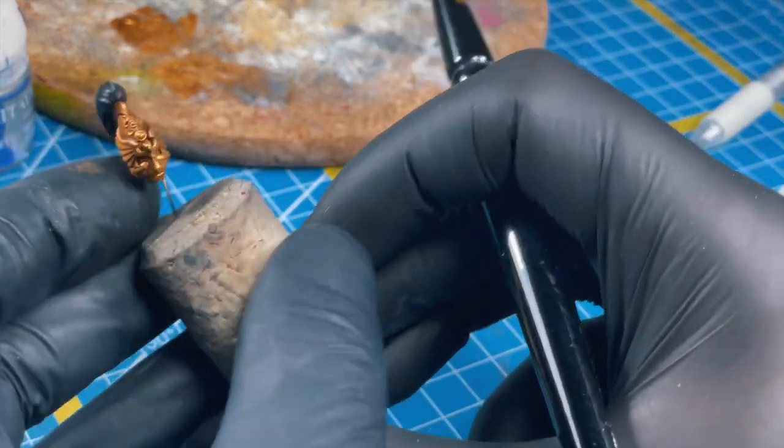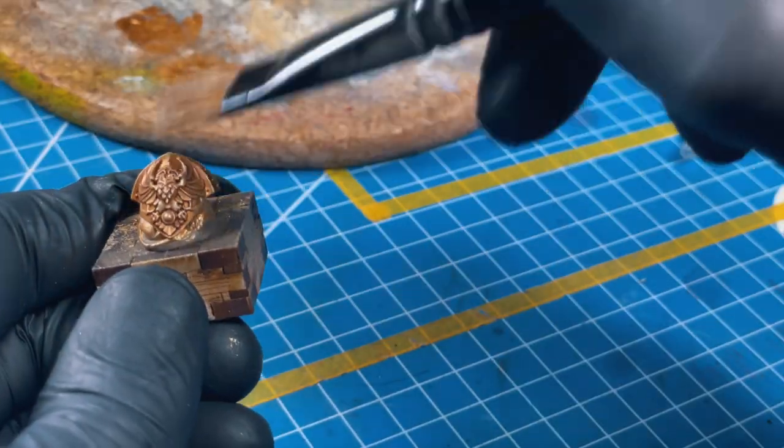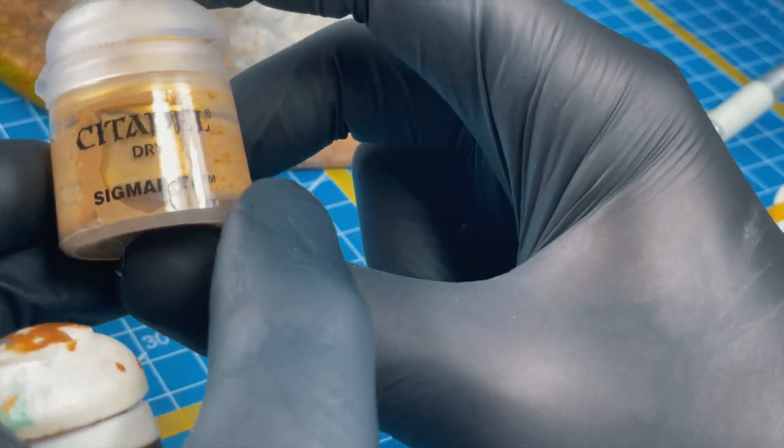It's dry brush stage two, so grab your Sigmarite dry paint and go lighter with this one. Grab only the most raised part of the model.